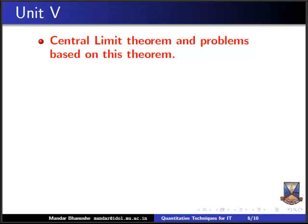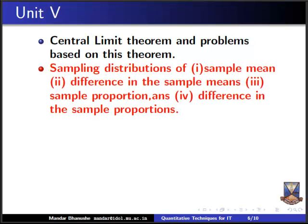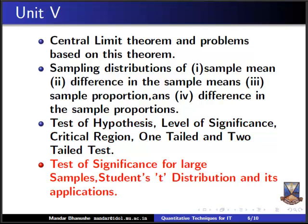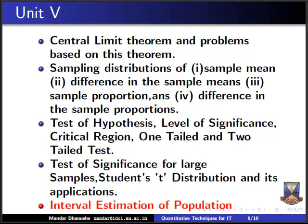In unit five we discuss the central limit theorem — its statement and problems based on it. We look at sampling distributions for sample mean, difference in sample means, sample proportion, and difference in sample proportions. We will also cover the test of hypothesis, level of significance, critical region, one-tailed and two-tailed tests, test of significance for large samples, Student's t-distribution and its applications, and interval estimation of population.